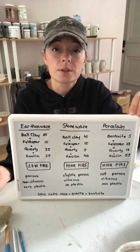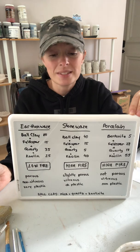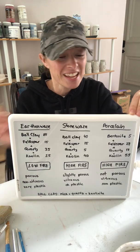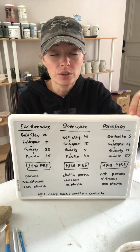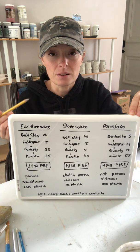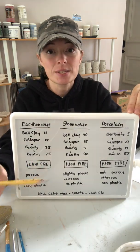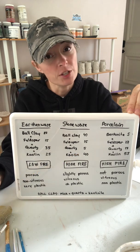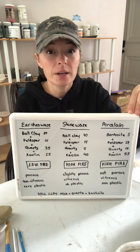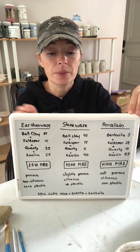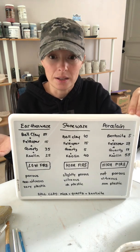And then the kaolins — the super fancy and demanding component. In earthenware you see about 25% kaolin. Stoneware is much higher at around 40%, which is why it's a much tighter clay body. And porcelain, of course, is the highest kaolin content.